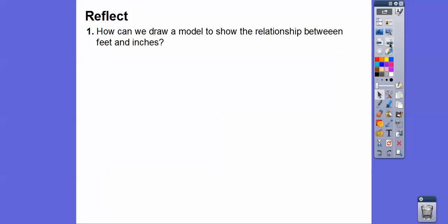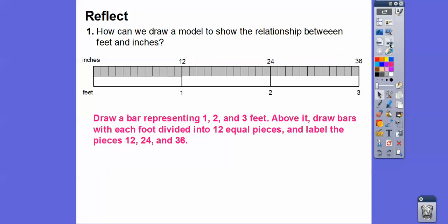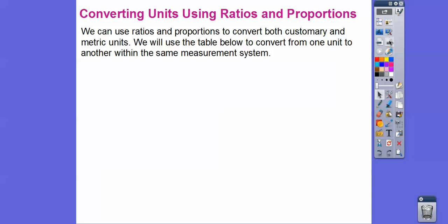How can we draw a model to show the relationship between feet and inches? We can draw a bar representing one, two, and three feet, then above it draw a bar separated into 12 equal pieces for each foot — 12 inches, 24 inches, 36 inches. So 36 inches equals three feet, 24 inches equals two feet, and 12 inches equals one foot.